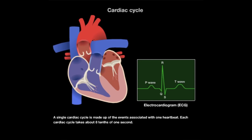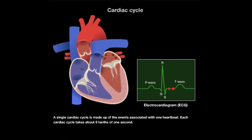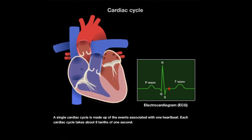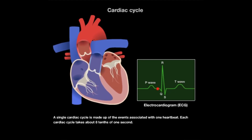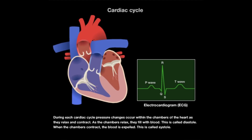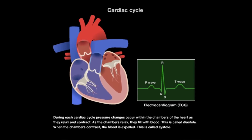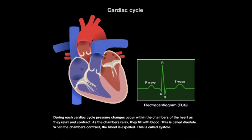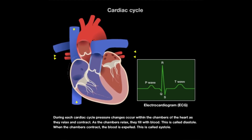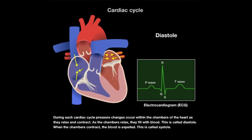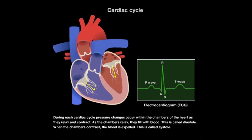A single cardiac cycle is made up of the events associated with one heartbeat. Each cardiac cycle takes about eight-tenths of one second. During each cardiac cycle, pressure changes occur within the chambers of the heart as they relax and contract. As the chambers relax, they fill with blood — this is called diastole. When the chambers contract, the blood is expelled — this is called systole.